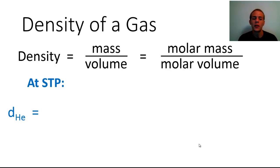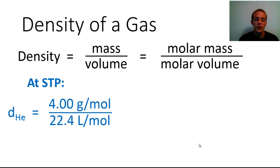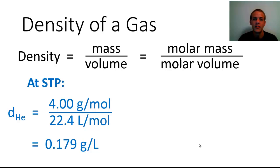For example, to find the density of helium gas at STP, we take the molar mass of helium — 4.00 grams per mole from the periodic table — and divide it by the molar volume, 22.4 liters per mole. The mole terms cancel, giving us a density in grams per liter: 0.179 grams per liter. This is a very low density, less dense than air, which explains why a balloon filled with helium floats.